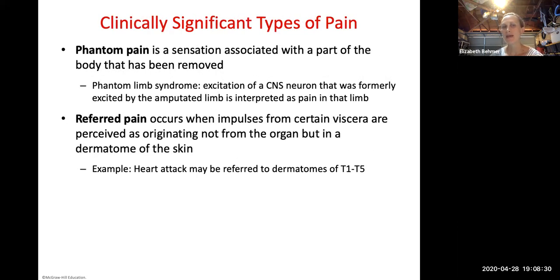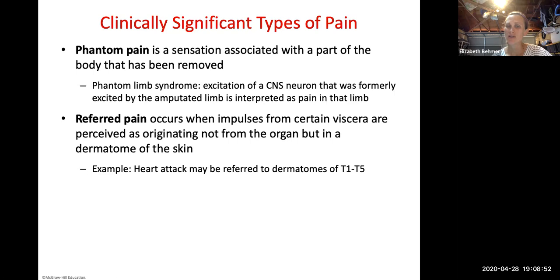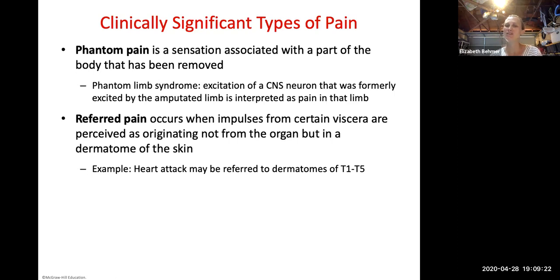Phantom pain and referred pain are clinically significant examples. Phantom pain is a sensation associated with a part of the body that has been removed — common with amputees, known as phantom limb syndrome. When a limb is amputated, the end of the neuron is cut off, but the rest of the neuron still exists. The excitation of a central nervous system neuron formerly excited by that limb can still be interpreted as pain in the missing limb — common with soldiers and something you may encounter in clinical practice.